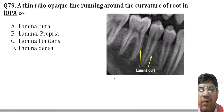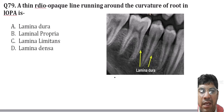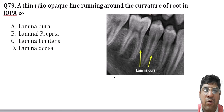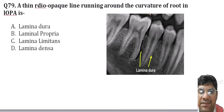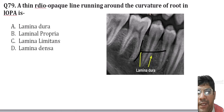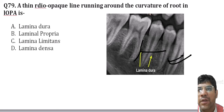A thin radiopaque line running around the curvature of the root in an IOPA is the lamina dura. Lamina dura is a dense compact layer of bone that lines the tooth socket and is an important diagnostic feature in assessing the health of the supporting bone and the presence of any pathology around the tooth.